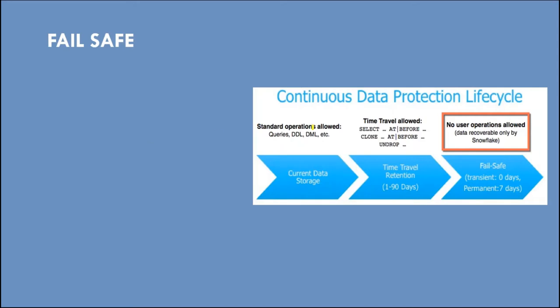We have already seen this continuous data protection lifecycle in the time travel section. Let's revisit this diagram. We already seen that we can perform various DDL and DML operations on the current data storage on Snowflake, which means we can create various types of objects such as database, schema, tables and views. As per the type of the table, it has respective time travel.